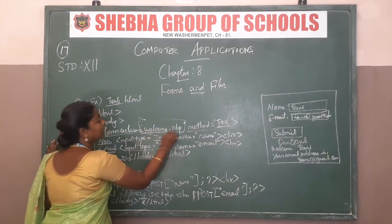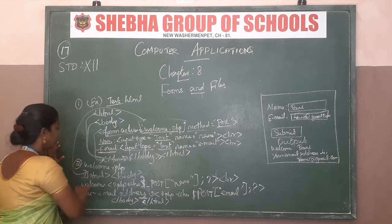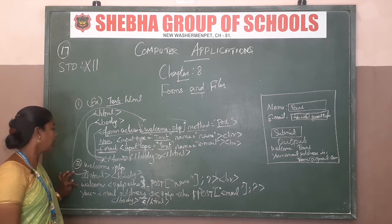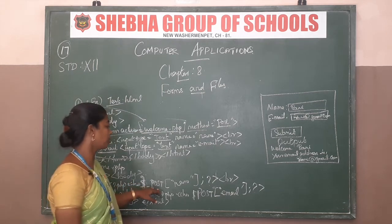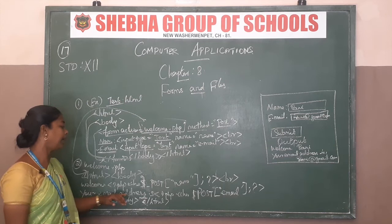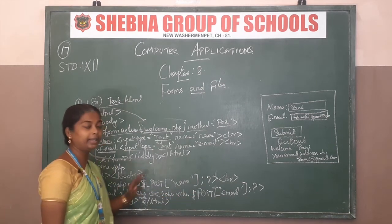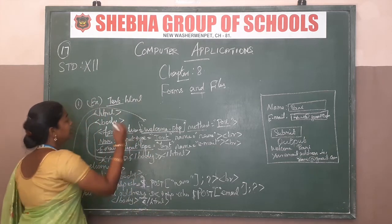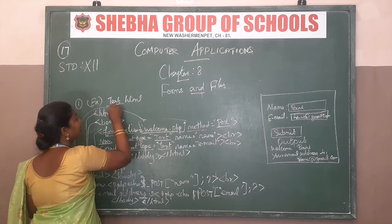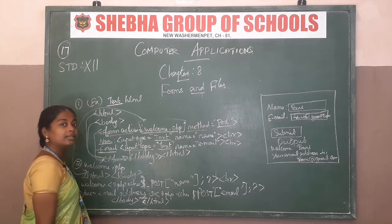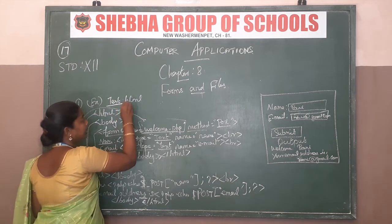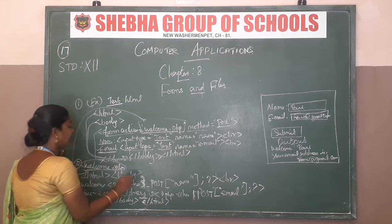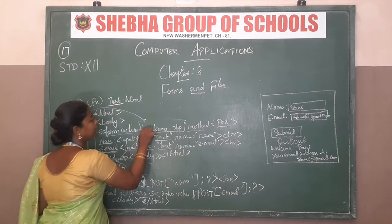Second, the welcome.php coding is created. HTML code, then body section, then PHP code is created — php echo. So these two files are saved. First file is test.html. Save as .html, and the second file is welcome.php — this file name is declared for this file.